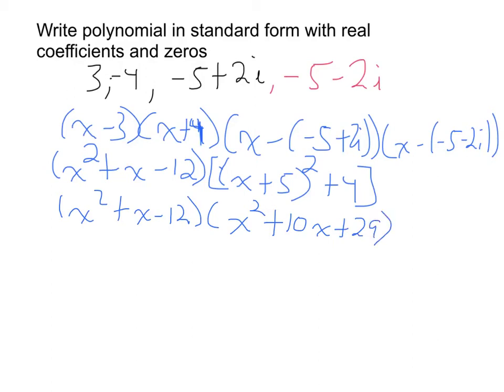And then, foiling it all out, I'll have x to the fourth plus 10x cubed plus 29x squared plus x cubed.